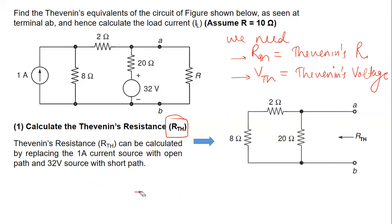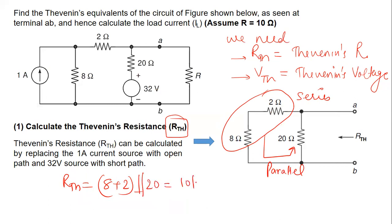The RTH is, if you see, these two resistances are in series. So it is 8 plus 2, and the resultant is in parallel with this one. So it is 10 parallel 20. RTH equals 10 into 20 divided by 10 plus 20, which is 200 by 30, or RTH equals 20 by 3 ohm.